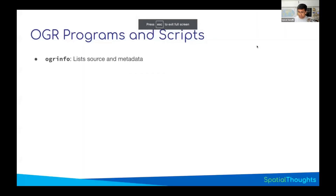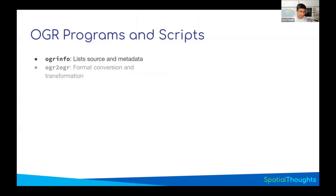OGR Info is similar to GDAL Info. If you have a vector dataset and you want to learn more about it — how many features, how many rows, what are its attributes, is it geo-referenced — OGR Info will be able to find that for you.